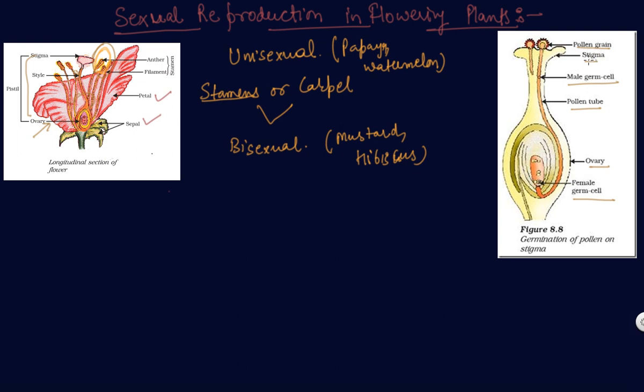After fertilization, the zygote divides several times to form an embryo within the ovule. This is the ovary and here is the ovule. The ovule develops a tough coat and is gradually converted into a new seed.